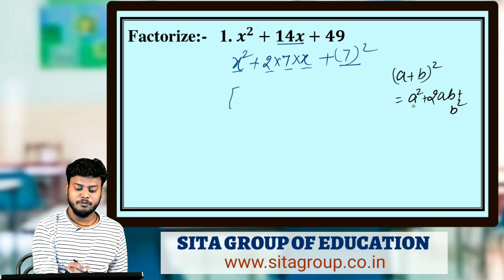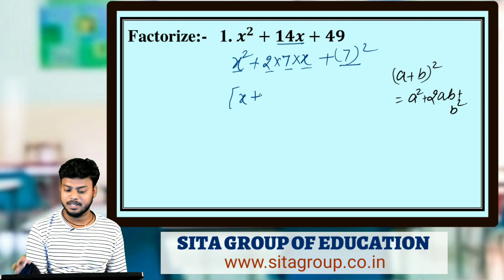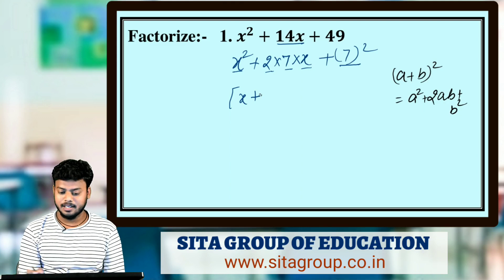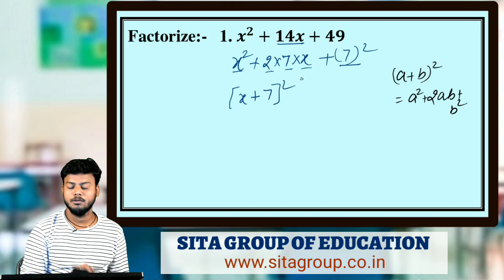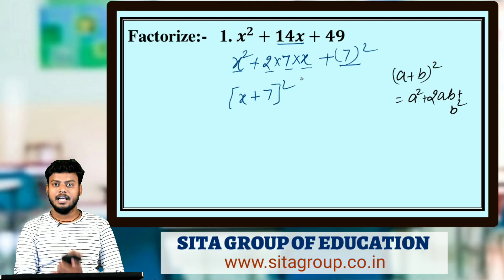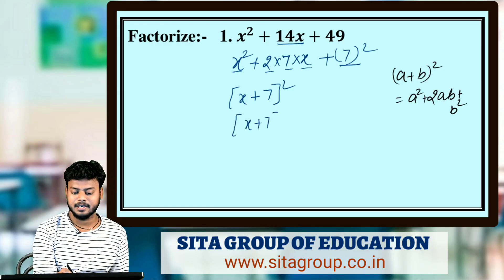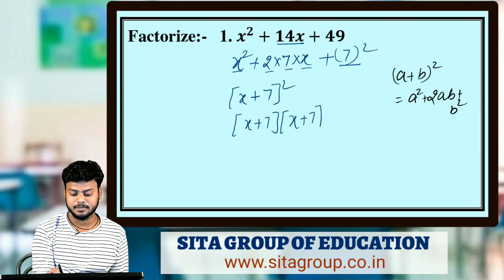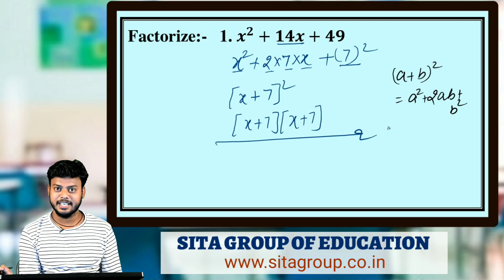Here the value of a is x and the value of b is 7. So the answer is (x + 7)², which can also be written as (x + 7)(x + 7). This is your answer — it's very easy.